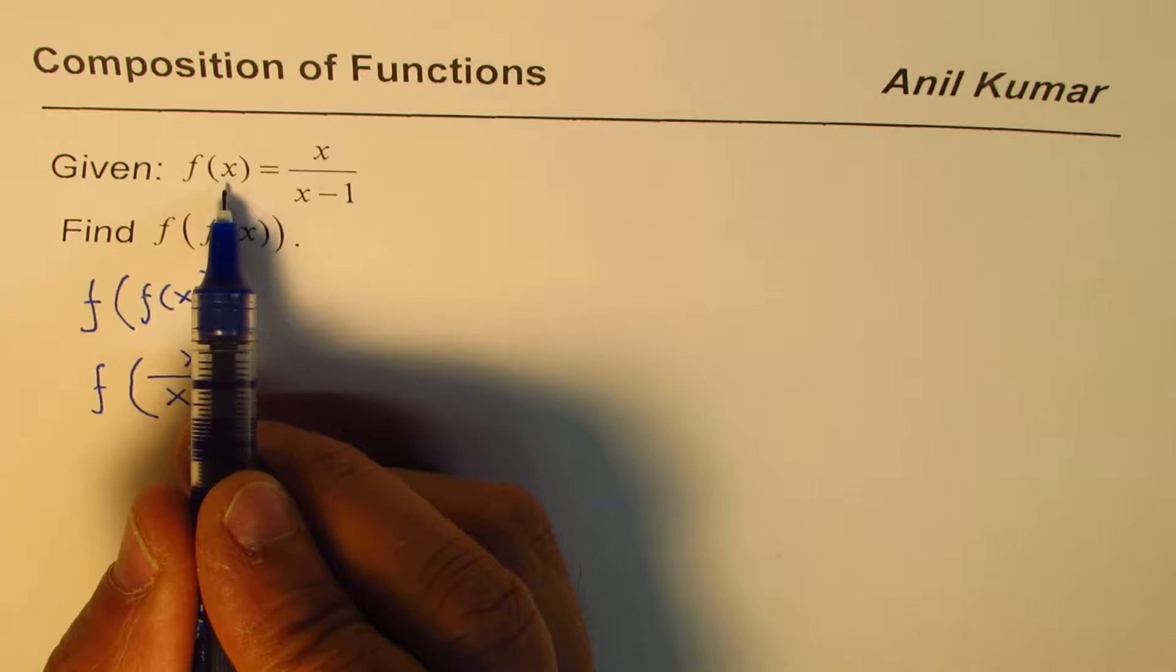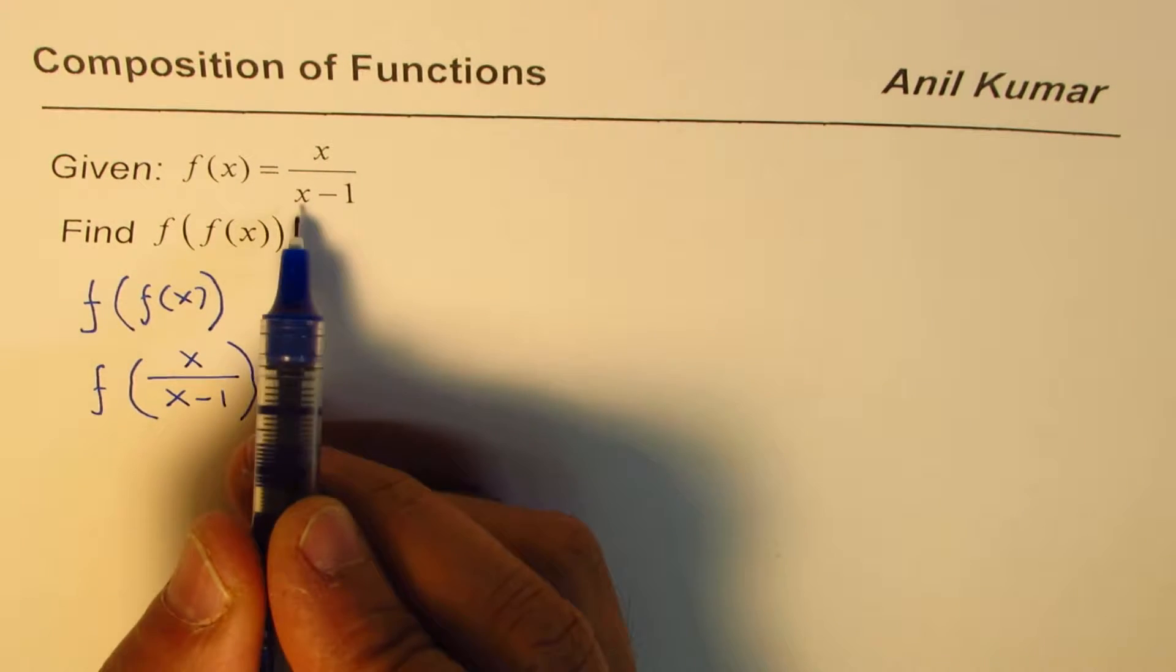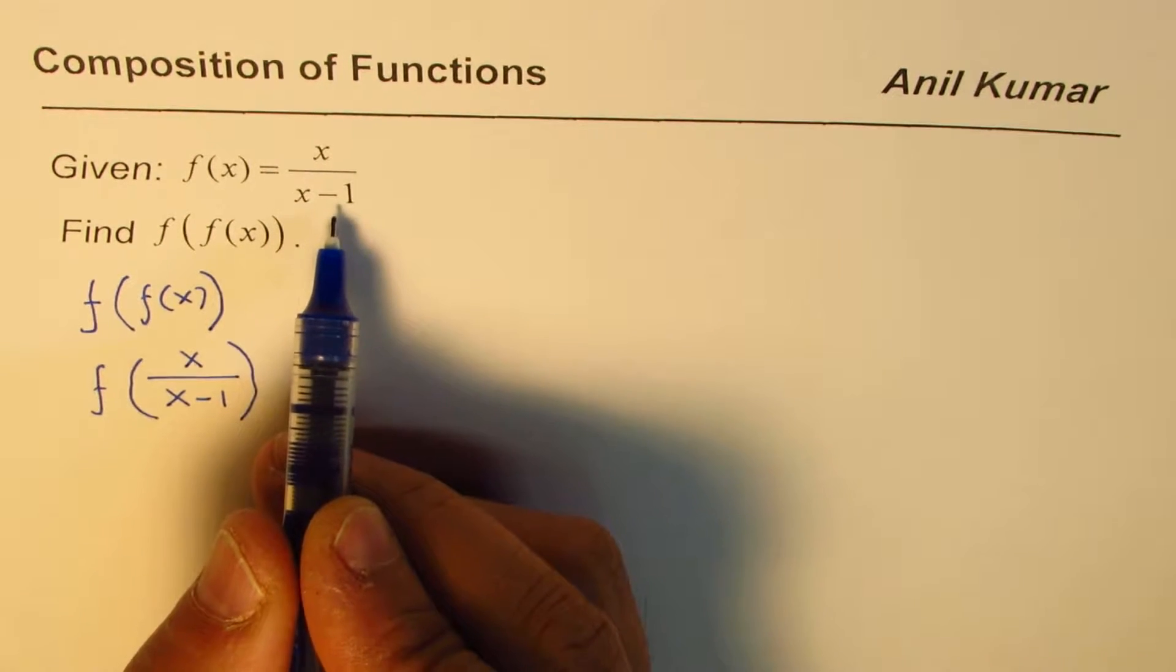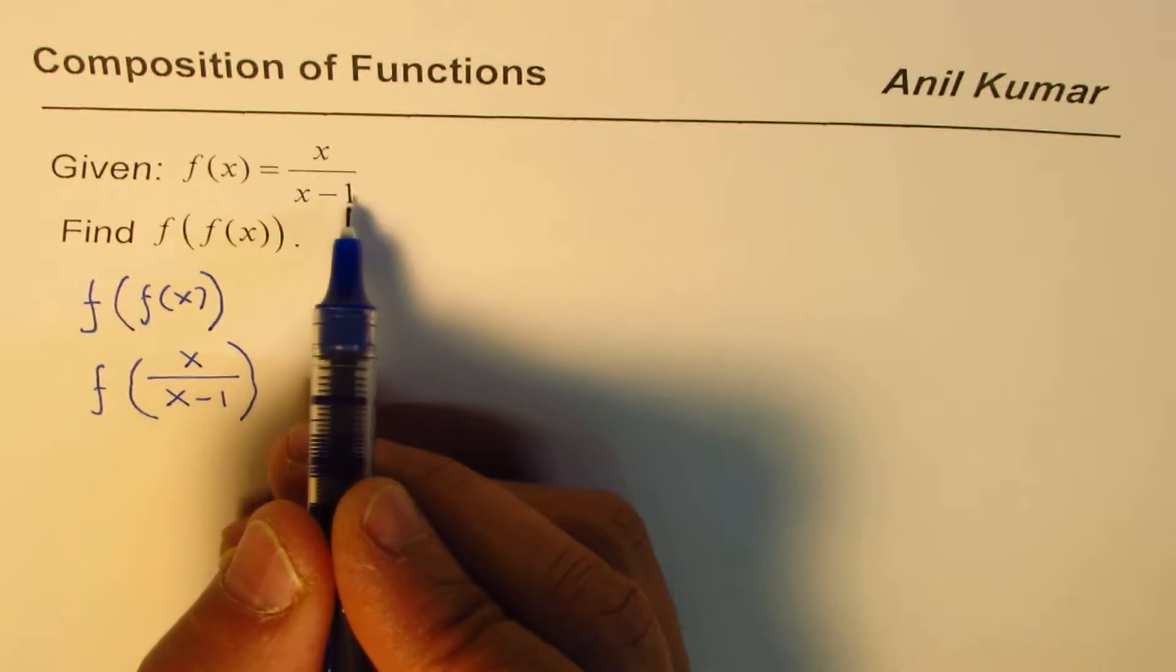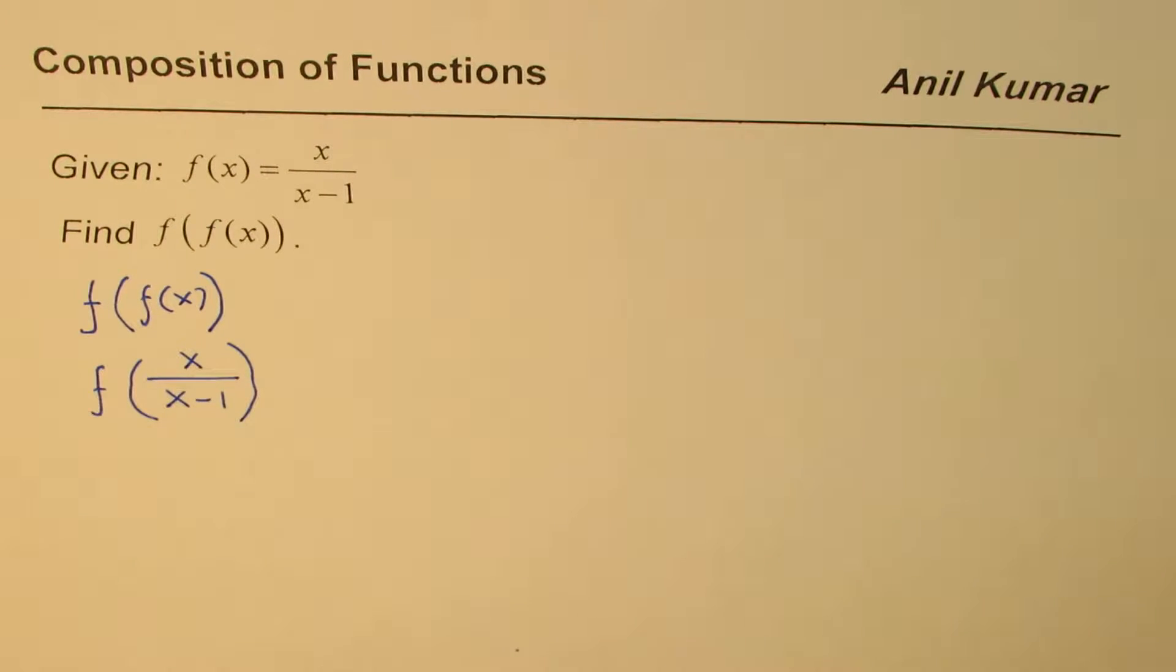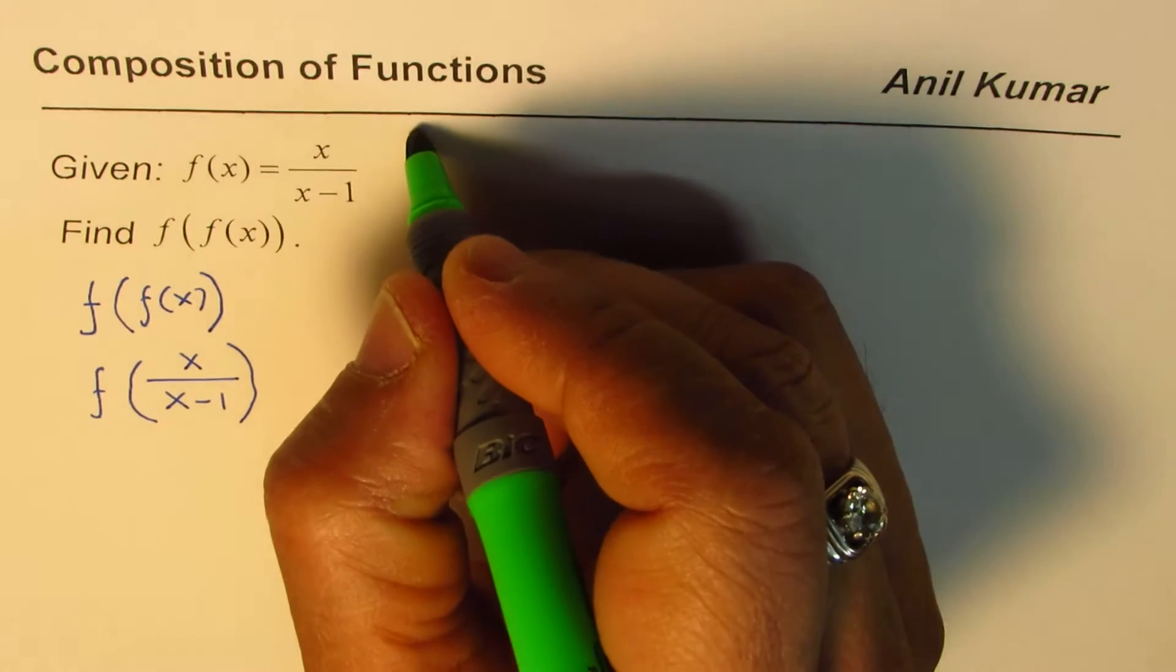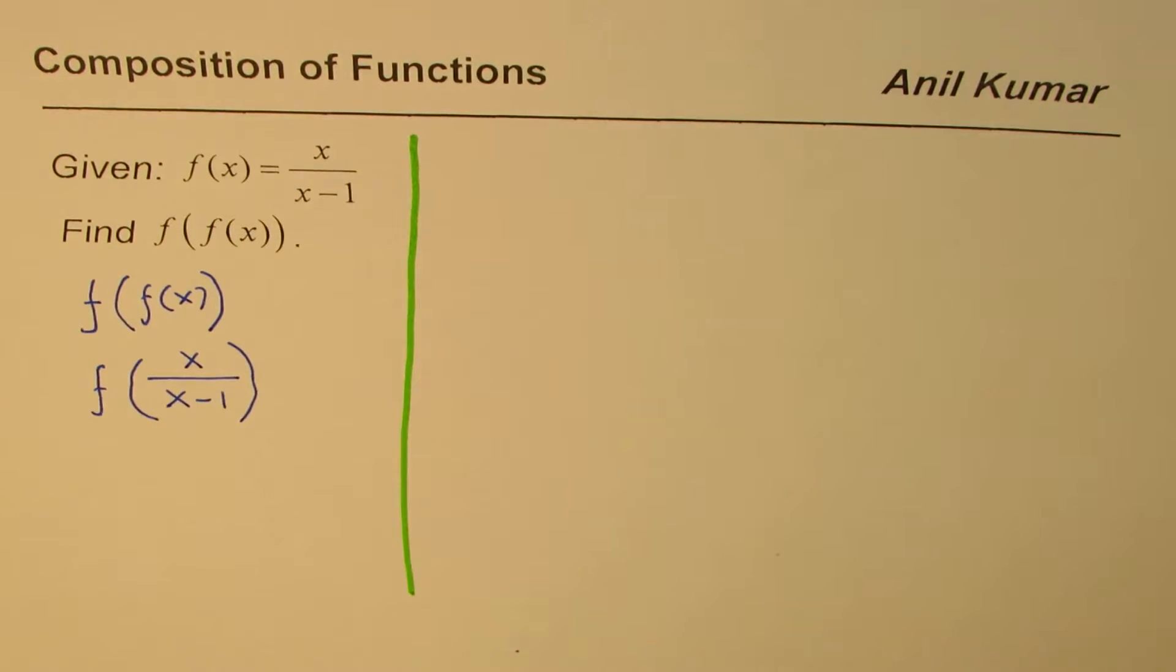So we are basically trying to find f of x over x minus 1, and f of x is given to us as x over x minus 1. That is to say, we'll replace all these x's with this value. That is how we get Composition of a Function.